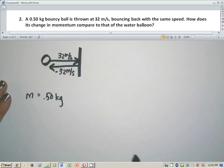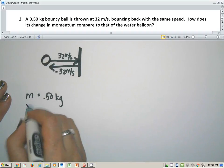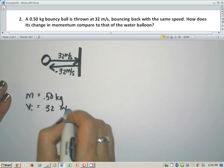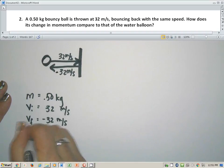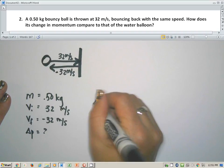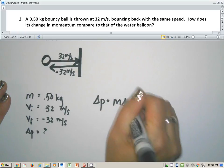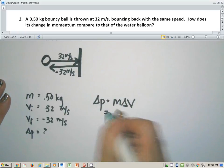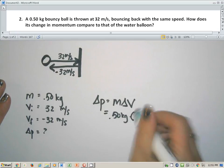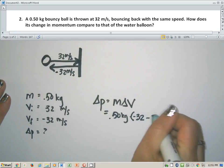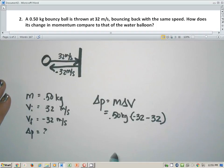v_i is going to be positive 32 meters per second and v_f is going to be negative 32 meters per second. We're still finding change in momentum. So same formula we had before: p equals m delta v. m is 0.5 just like the last problem. But this time we have negative 32 minus 32 for our velocity.